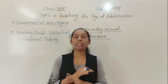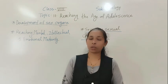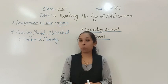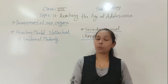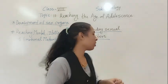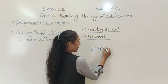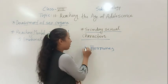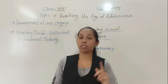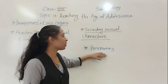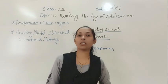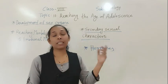Have you ever thought about why these changes happen — what causes all these changes in the body of adolescents? All these changes at the onset of puberty happen because of hormones. Hormones play a vital role during the changes of puberty. Whatever changes happen in girls and boys during puberty, all those changes take place because of hormones. Hormones are chemical substances which bring different changes in the human body.